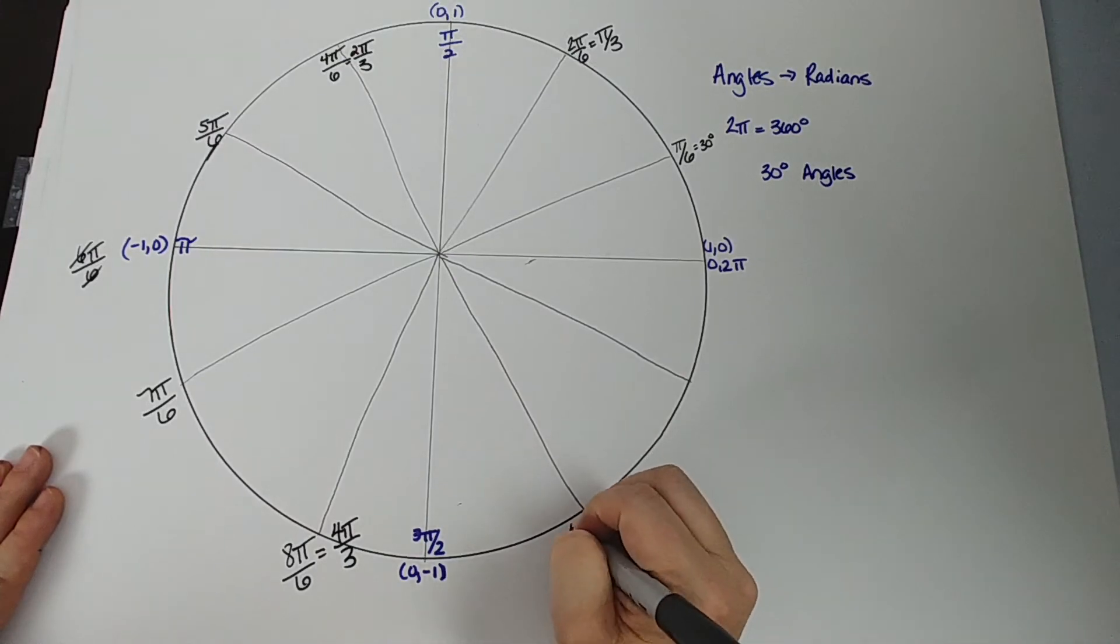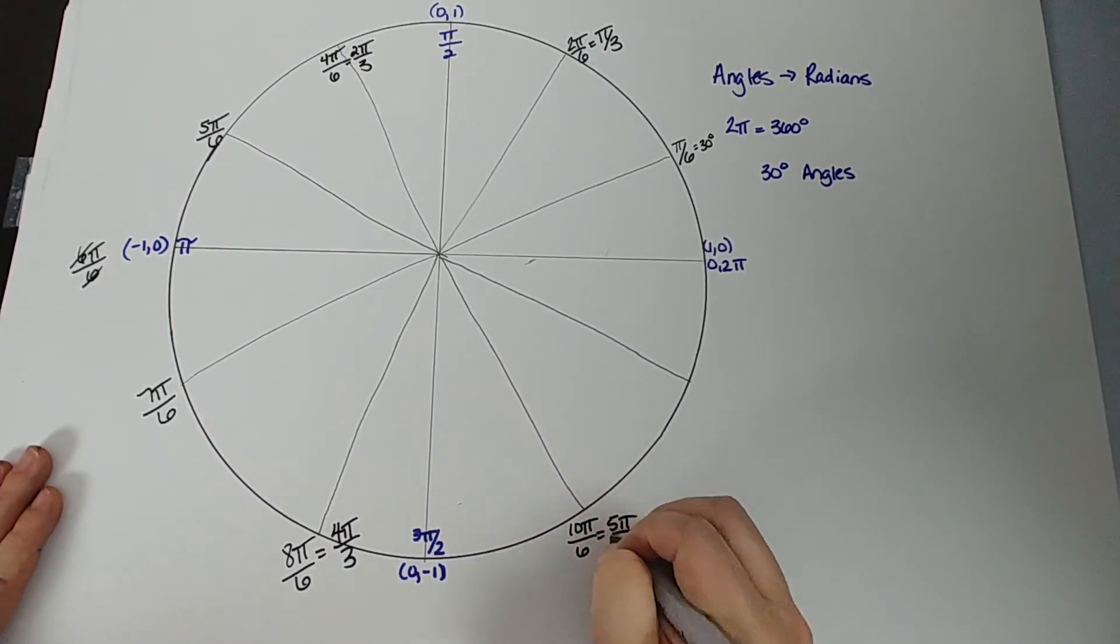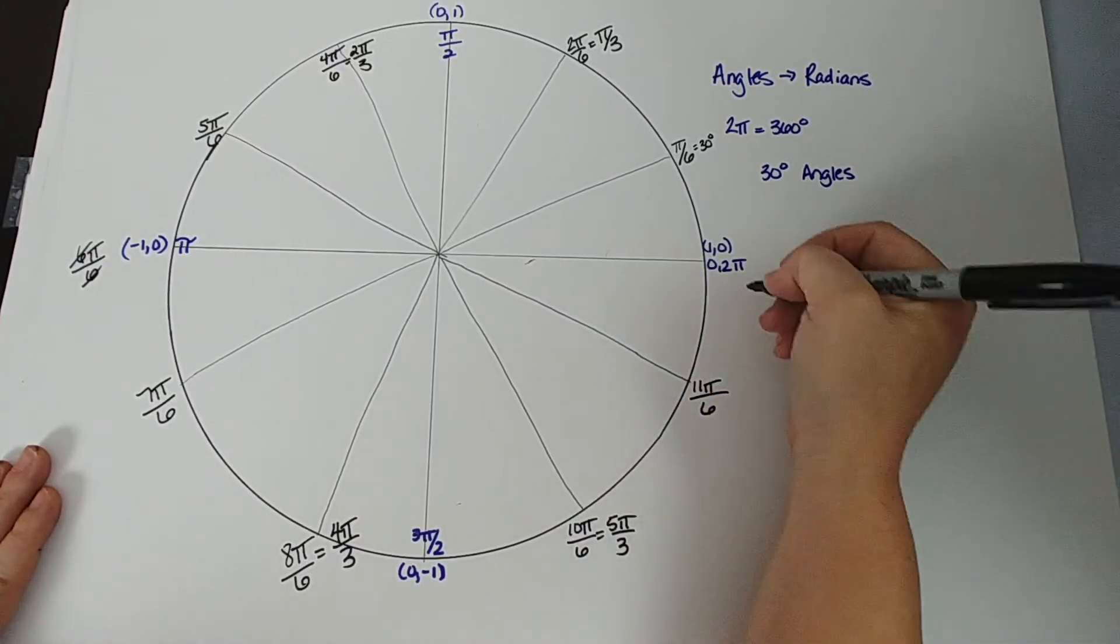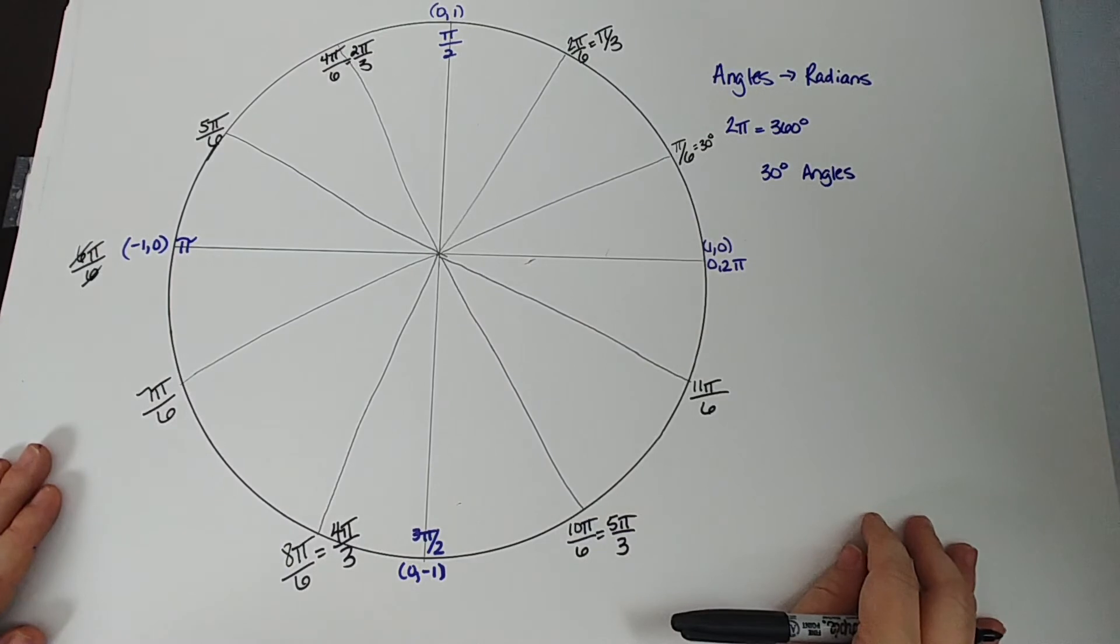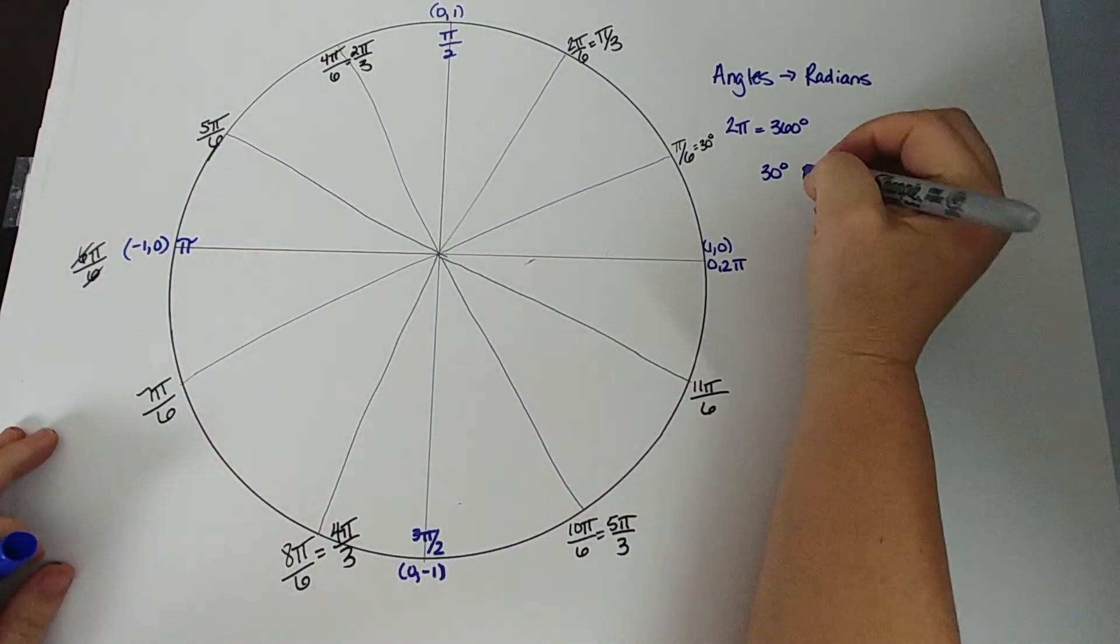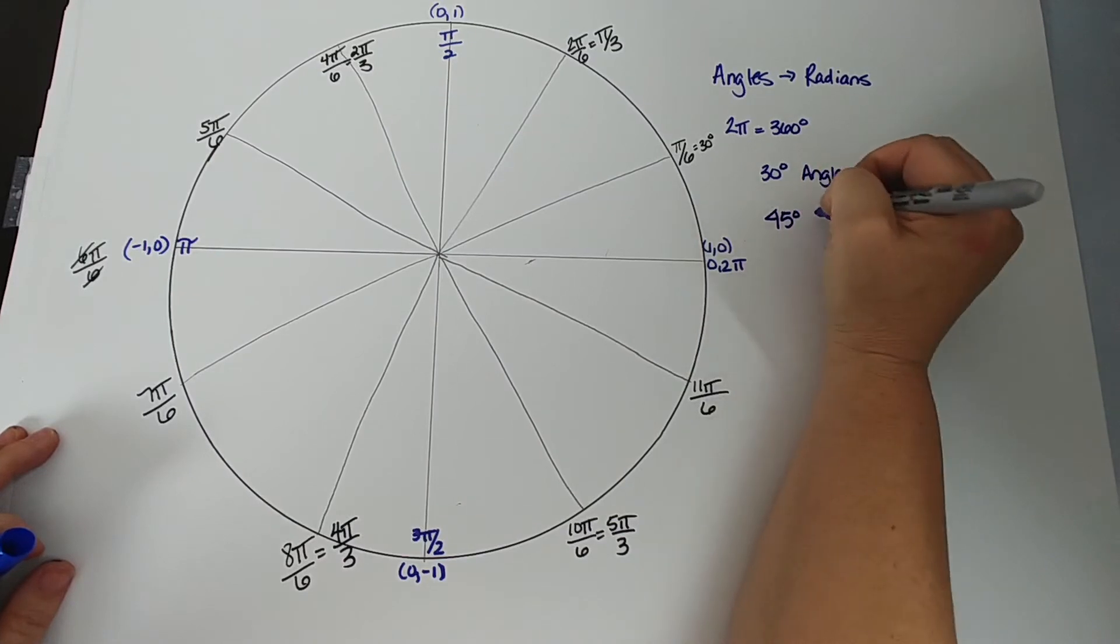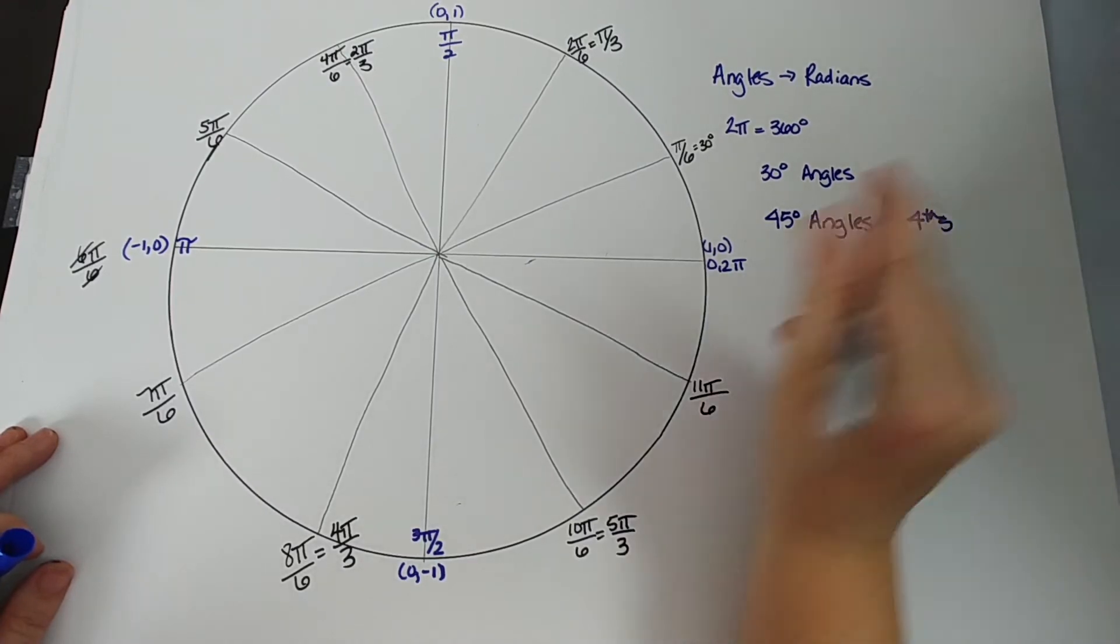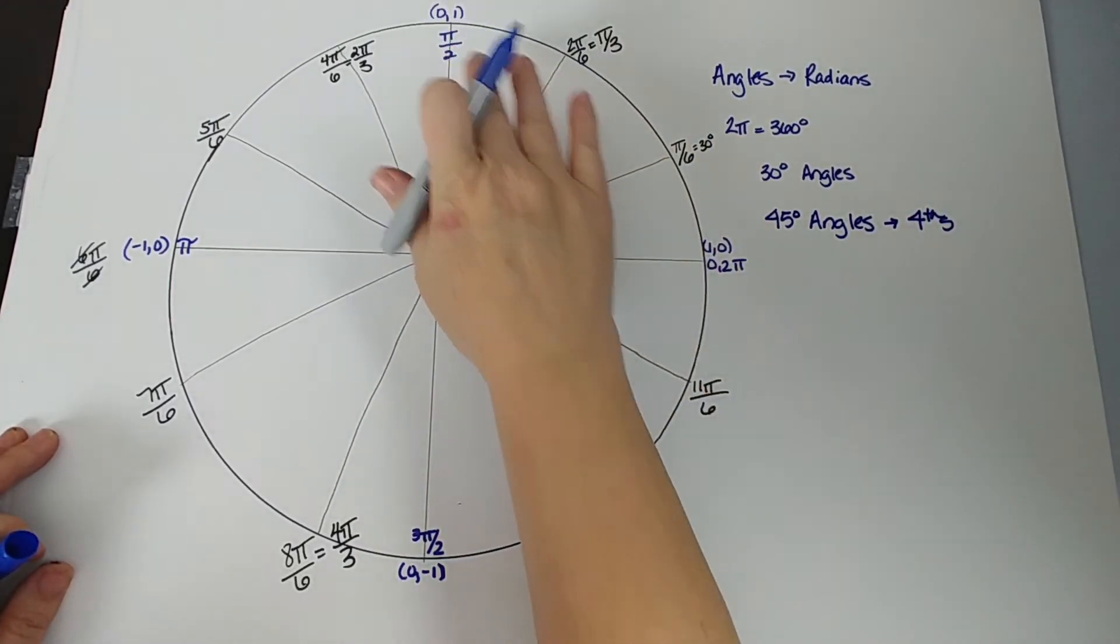10π/6, so 10π/6, which is 5π/3. So then we have 11π/6, and 12π/6 is 2π. So we have all our 30, 60, 90 degrees covered. Super. What are the other angles that we need to know in this thing? We need to know the 45s. So the 45 degree angles, we're going to take it into fourths.